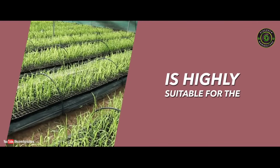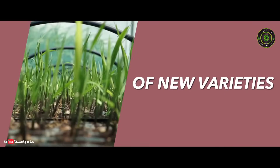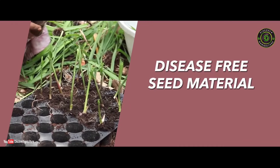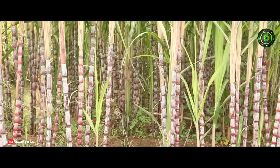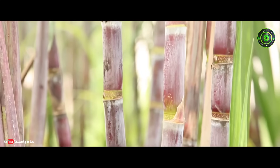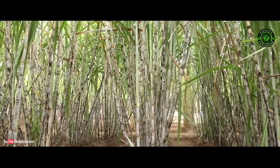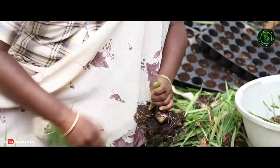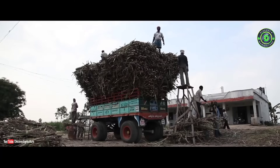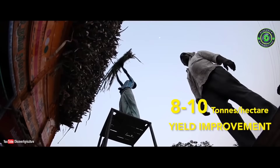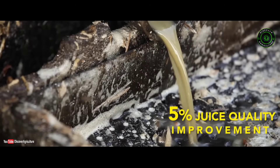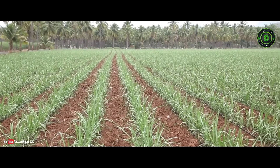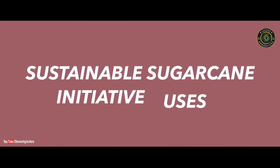The tissue culture method is highly suitable for the rapid seed multiplication of new varieties. By adopting meristem culture, disease-free seed material may be developed at a faster rate. The micropropagation technology in sugarcane provides various advantages, the most noteworthy being the rapid multiplication of new varieties. Plants produced through meristem culture are free from diseases and pests. The use of disease-free seed material ensures a yield improvement of 8 to 10 tons per hectare with an improvement of 5% in juice quality. Effective varietal scheduling is possible and the field longevity of the variety can be sustained.